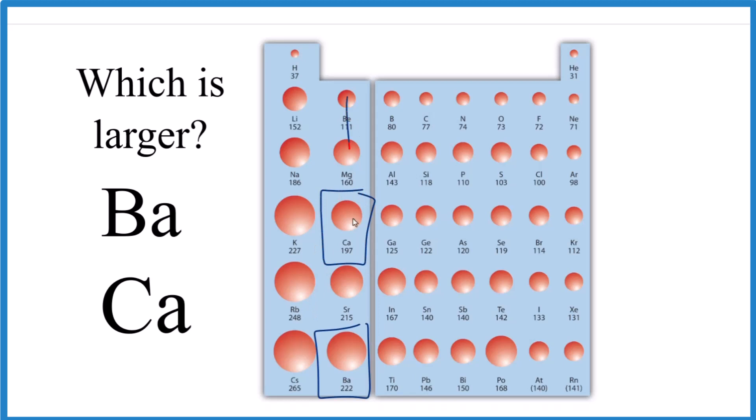Remember we said as we go down, the atomic radius increases. So barium, that's lower than calcium, and barium will be larger than calcium, just following the trend here.